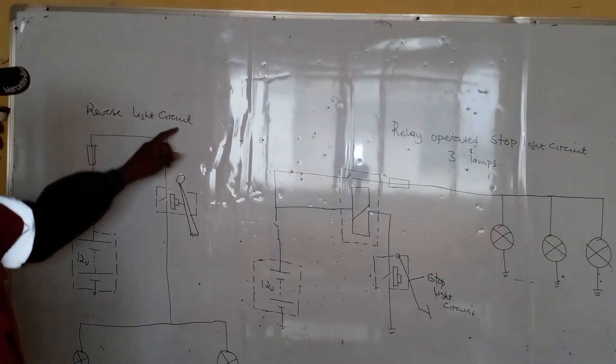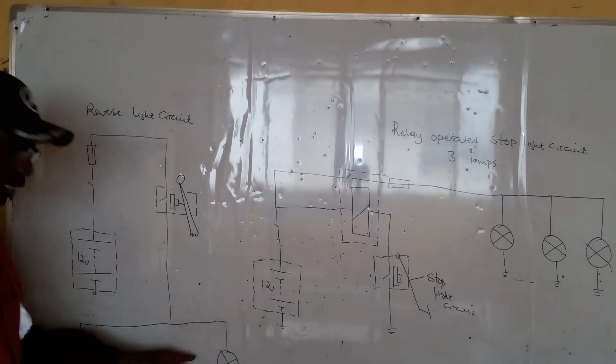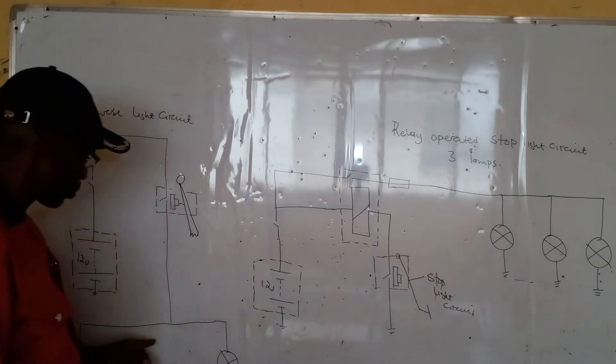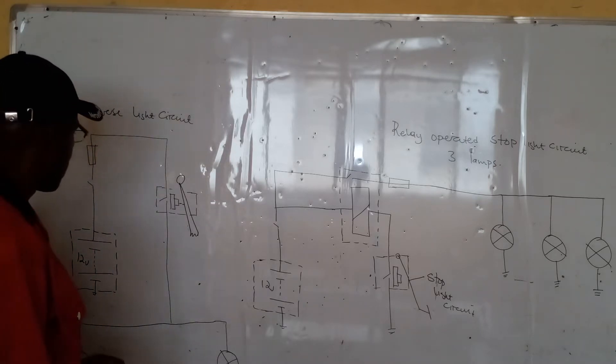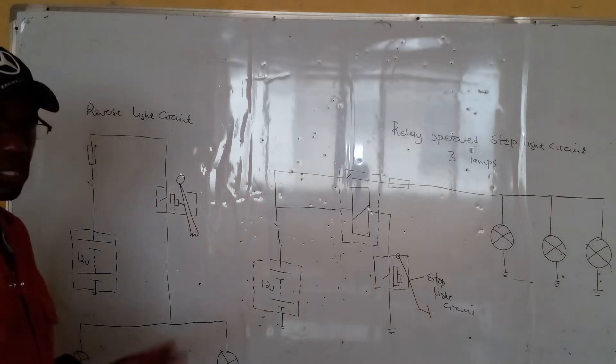The reversing light circuit - the function of the reversing light circuit is to indicate to the world behind that the vehicle is moving backwards. This will also help those behind the motor vehicle to approach it with caution.